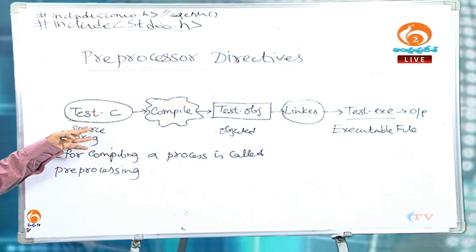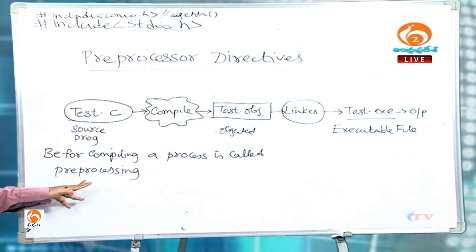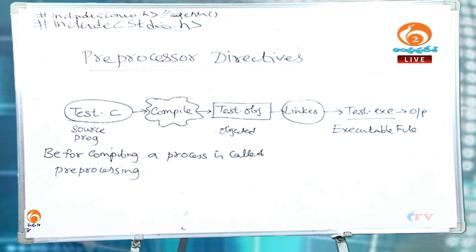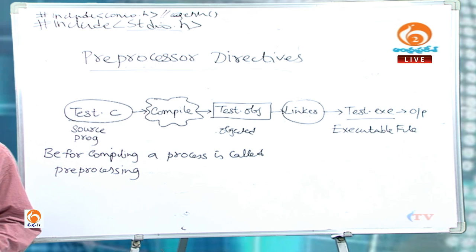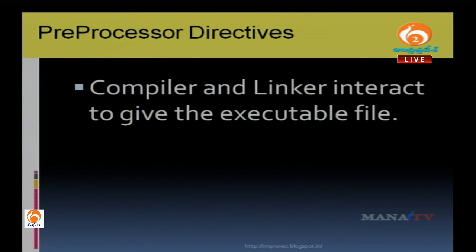Before compiling the source program, one process called preprocessing takes place, done by the preprocessor. Once compiled, the program becomes a .obj file. When executed, the linker links the header files to the .obj file. Then the compiler and linker interact to give the executable file.